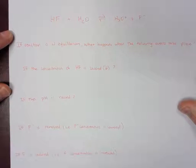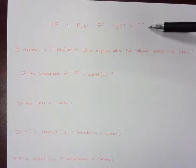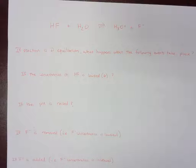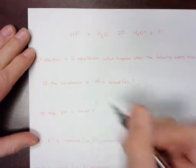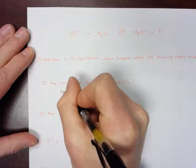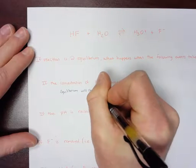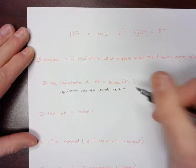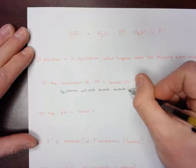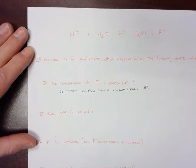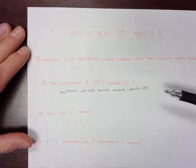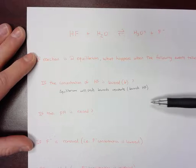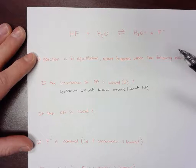If the concentration of HF is lowered — if we start off at equilibrium and the concentration of HF is lowered — that means we're removing a reactant. If we remove a reactant, the equilibrium will shift towards the side where you removed it. So if the concentration of HF is lowered, equilibrium will shift towards the reactants, which is towards HF. That's to balance the loss of HF.